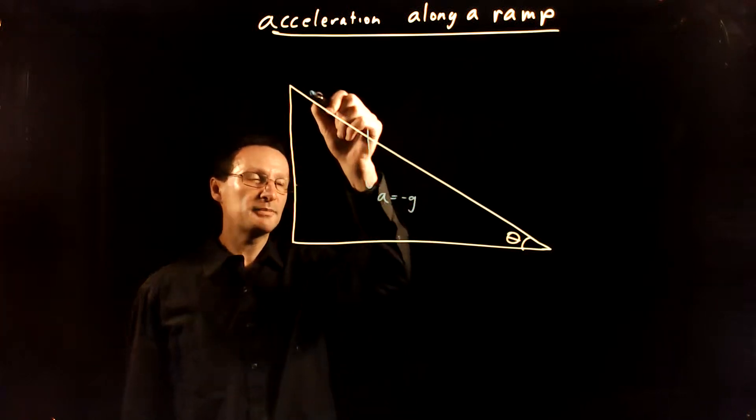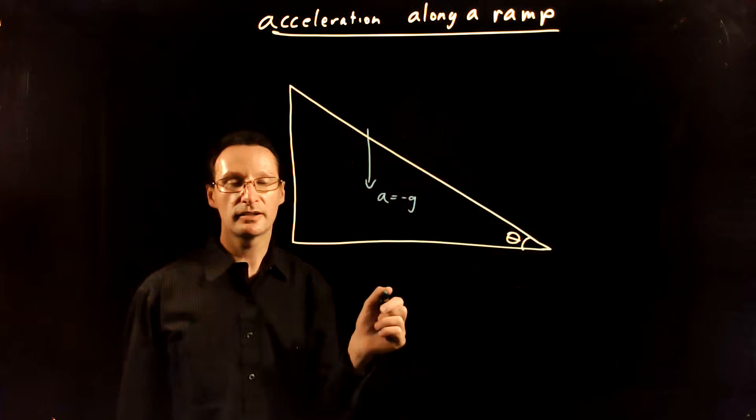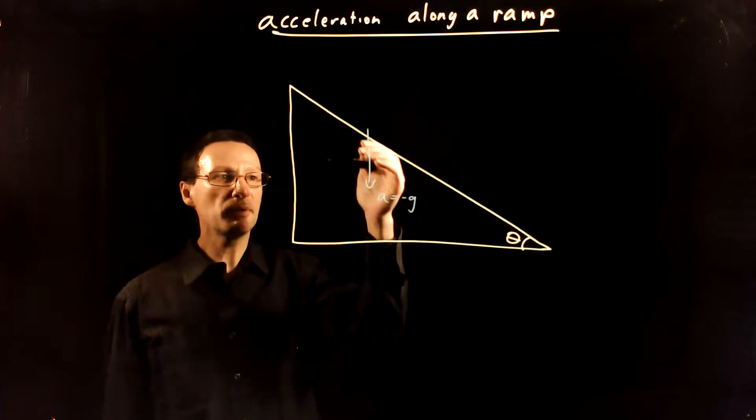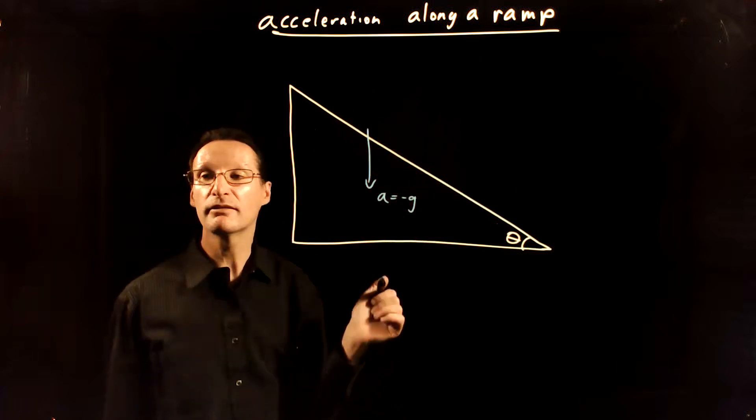What we want to do though, if the object is constrained to move along the ramp, is find how much of that acceleration will be parallel to the ramp.